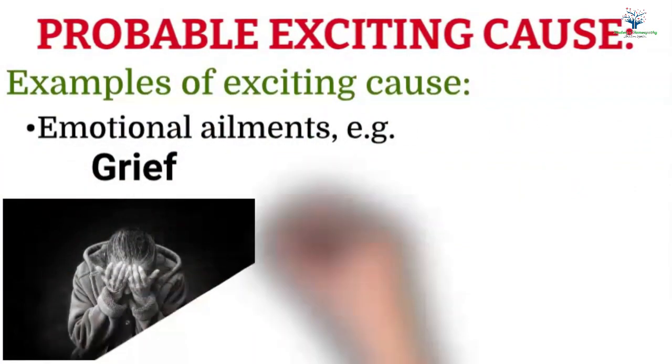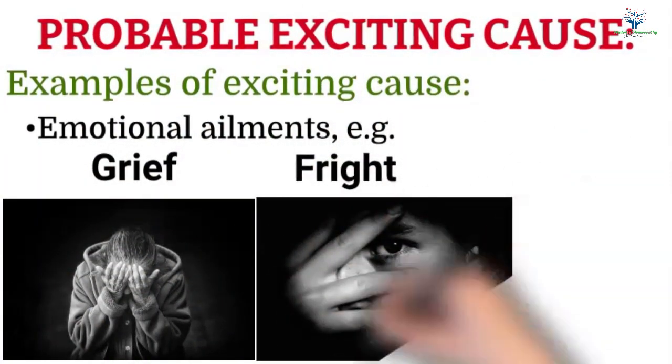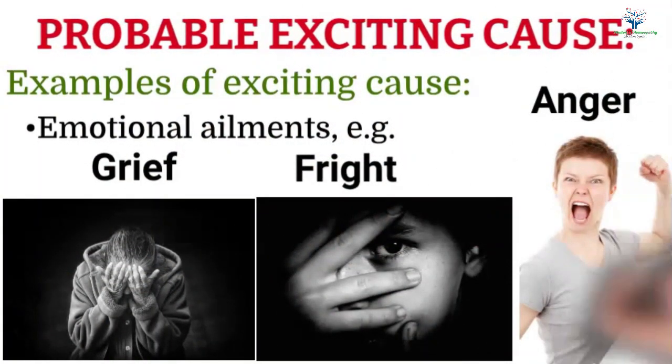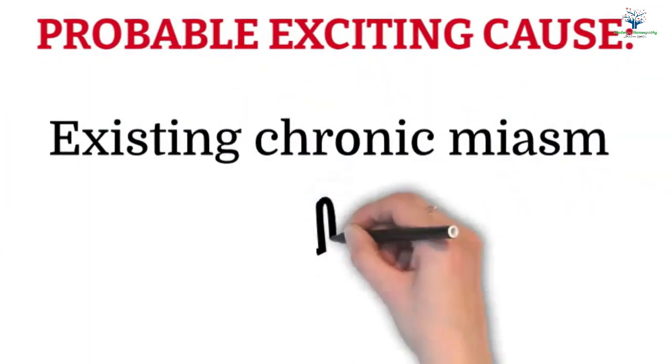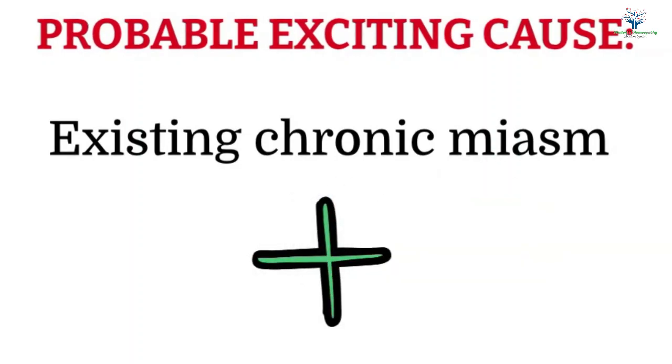This may be the environmental changes or emotional elements like grief, fright, anger, etc. Exciting causes create an additional disorder apart from the existing chronic miasms.